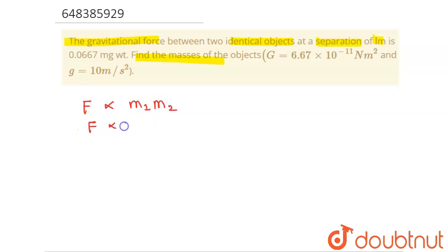and inversely proportional to the square of separation distance. We are taking it as small r. So F = G m₁ m₂ over r squared.